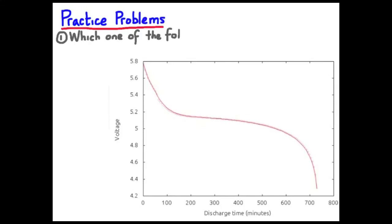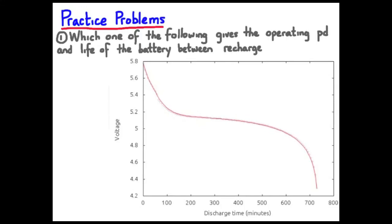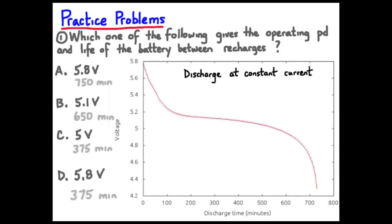Let's try our practice problem here. Here we have a graph. And the question is, which one of the following gives the operating potential difference and life of the battery between recharges? So it's a secondary cell here. A, B, C, D. Pause your viewer and try this question.